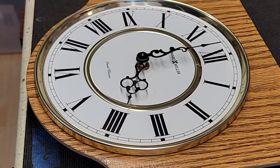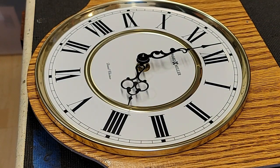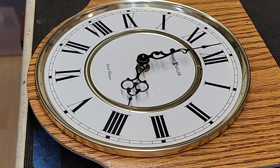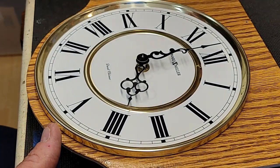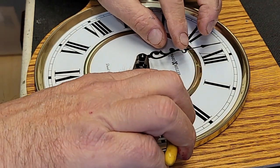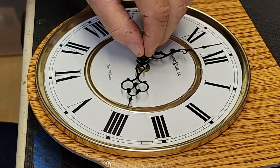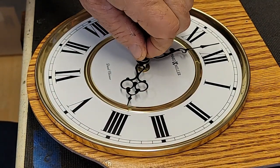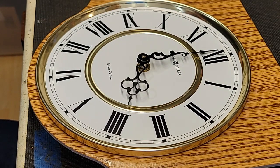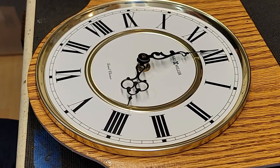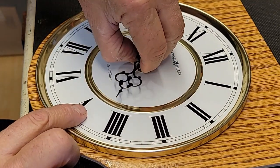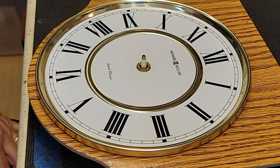All right, so to get this guy off, just like all the other ones, we are just going to take this nut off and the hand will come right off. Put a little bucket so I don't lose it. Our hand, when the minute hand comes off, the hour hand slides right off.